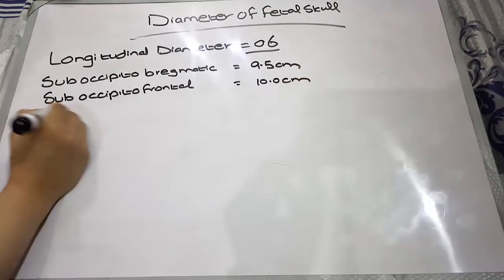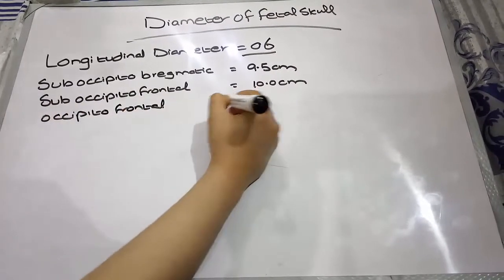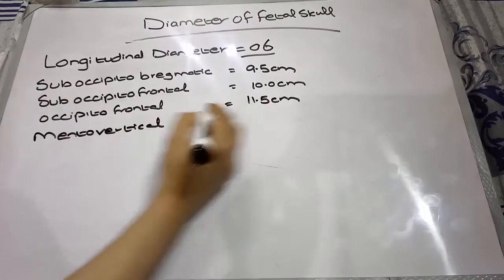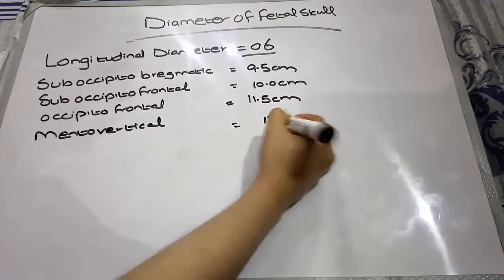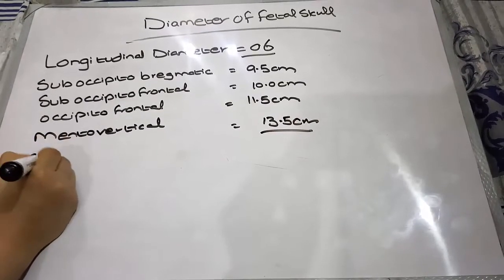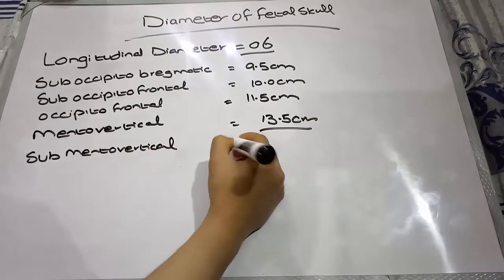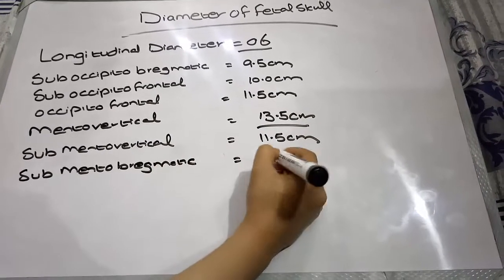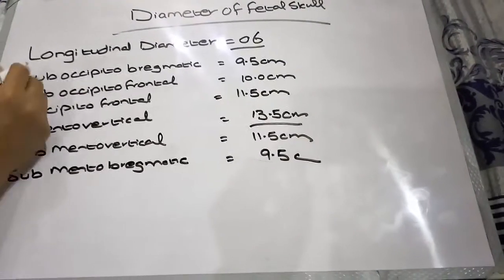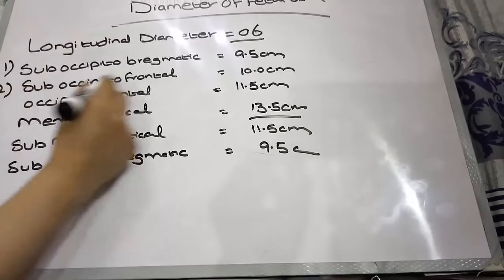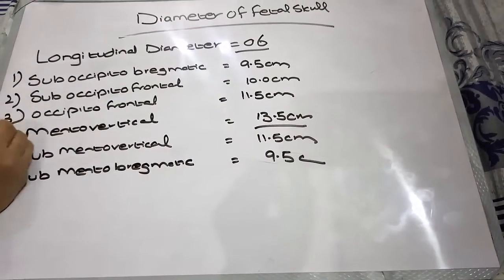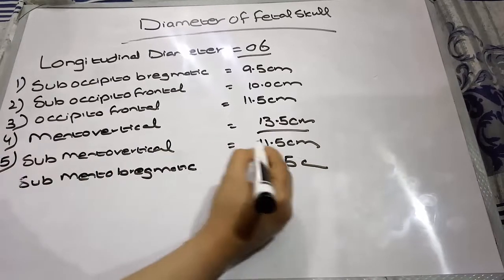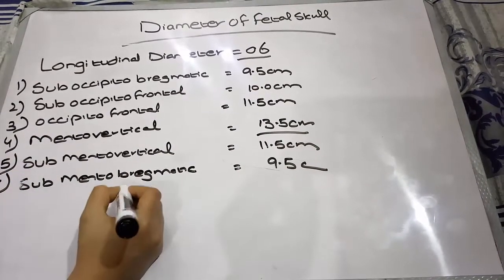The occipitofrontal diameter is 11.5 centimeters. The mento-vertical diameter is the largest diameter at 13.5 centimeters. The sub-mento-vertical is 11.5 centimeters. So in summary: sub-occipital bregmatic 9.5cm, sub-occipital frontal 10cm, occipitofrontal 11.5cm, mento-vertical 13.5cm, sub-mento-vertical 11.5cm, and sub-mento-bregmatic 9.5cm.